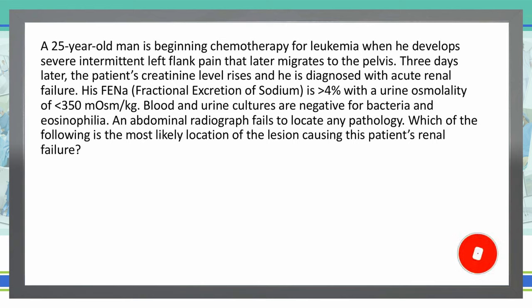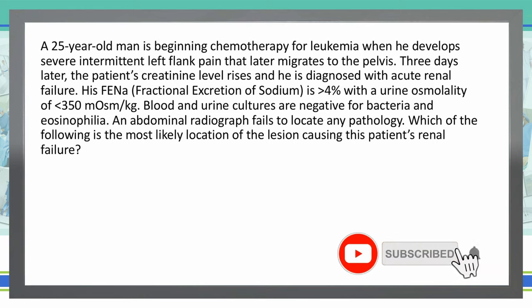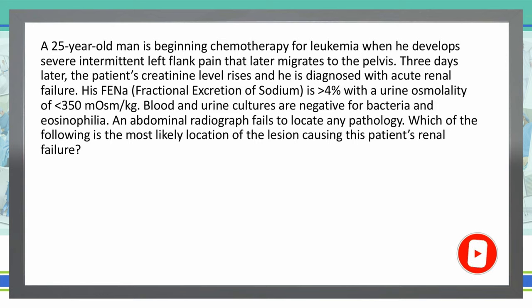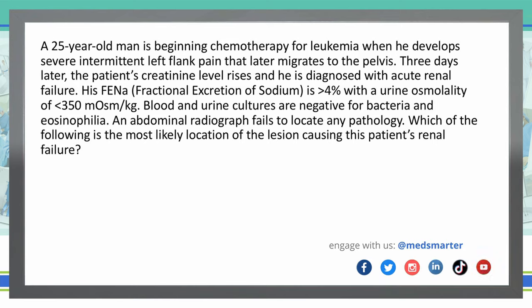As always, we start with the last sentence of the vignette and then read the rest. Which of the following is the most likely location of the lesion causing the patient's renal failure? A 25-year-old man is beginning chemotherapy for leukemia when he develops severe intermittent left flank pain that later migrates to the pelvis. Three days later, the patient's creatinine levels rise and he is diagnosed with acute renal failure. His FENa, or fractional excretion of sodium, is greater than 4% with a urine osmolality of less than 350 milliosmoles per kilogram. Blood and urine cultures are negative for bacteria and eosinophilia. An abdominal radiograph fails to locate any pathology.